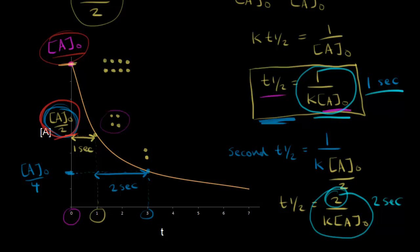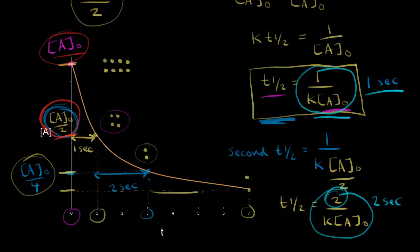Each half-life is going to be twice as long as the one before it. So for the third half-life, we're going from two molecules to one molecule. Our starting concentration is now at that point; half of that is found on the graph, and dropping down we can see time equals seven seconds. So the third half-life is four seconds — twice the preceding half-life.